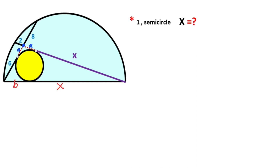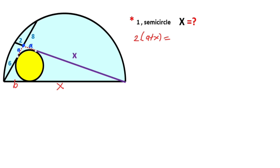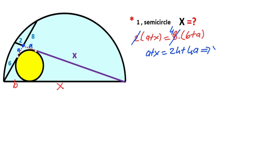If you focus on this diagram, we can apply the power of a point. Therefore, two times (a plus x) must equal eight times (six plus a). Let's simplify: a times x equals 24 plus 4a, which means x equals 24 plus 3a. This is the first equation.